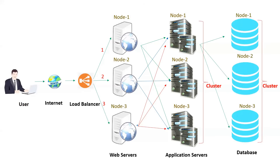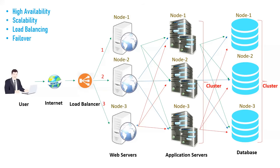Requests from the load balancer are distributed to the web servers, and requests to the back-end application servers are distributed from the web servers. All three application servers are in a cluster. If there are three database nodes, each application node can contact any database node for high availability and proper load balancing. Each application node — Node 1, Node 2, or Node 3 — can contact any of the database instances in the back end.